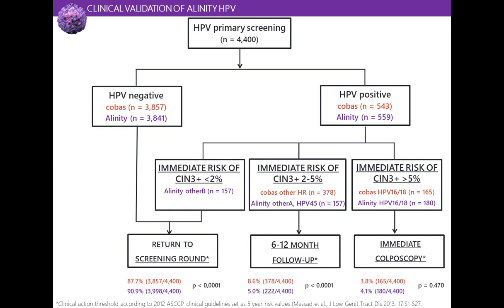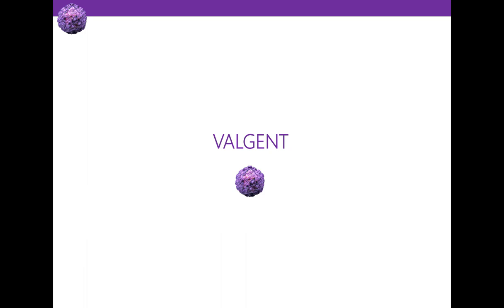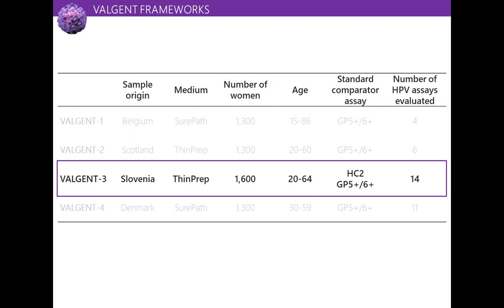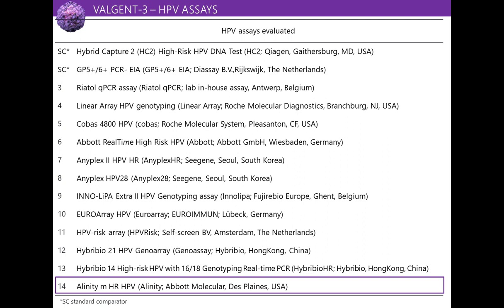I will now present the clinical performance of Alinity in the Valgent framework. Valgent was initiated in 2012 as a framework allowing the comparison and validation of HPV assays with different genotyping capability. Four Valgent frameworks have been performed so far; today we focus on Valgent 3, performed on Slovenian samples, which included 14 different HPV assays. We will focus on the performance of Alinity.